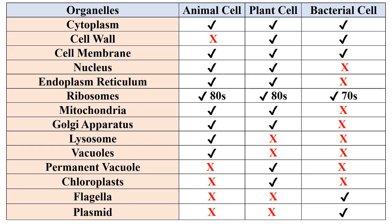In summary, cytoplasm and cell membrane are found in animal, plant, and bacterial cells. In addition, ribosomes are also found in animal, plant, and bacterial cells, with a subunit structure of 80S for animal and plant cells and 70S for bacterial cells. Cell wall is found only in plant and bacterial cells.